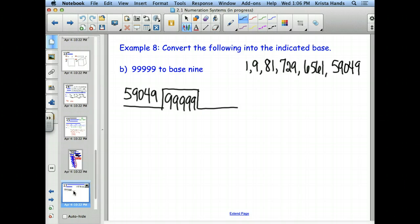Taking a look at 99,999, how many times will the 59,049 go into that? Yeah, just once, right? It's a pretty close value, actually. And then I will multiply 1 times that to get the 59,049. And if I subtract, what do I have?